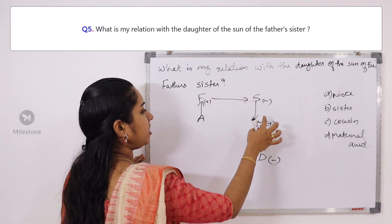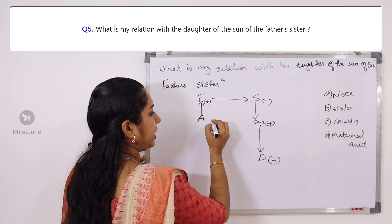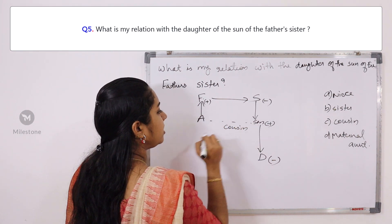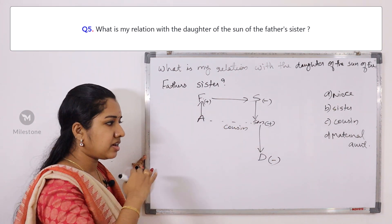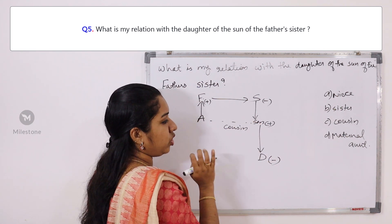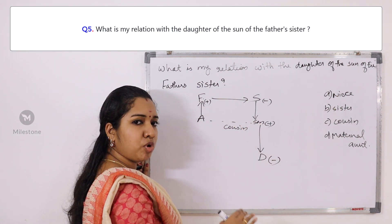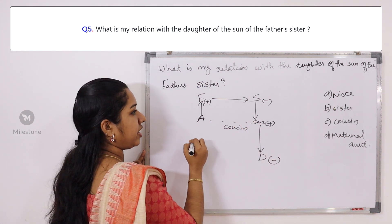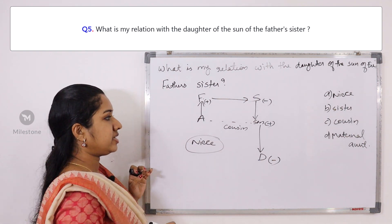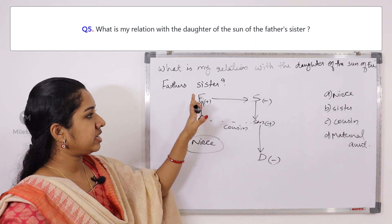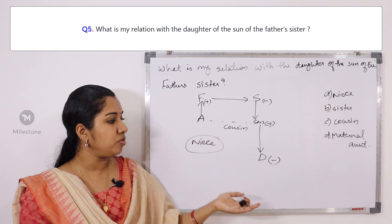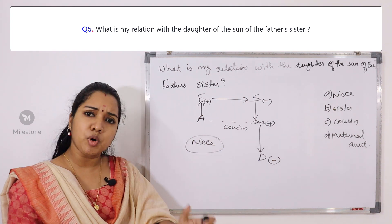What do I represent? Cousin. Cousin brother — cousin brother is the third generation. The answer is cousin brother.